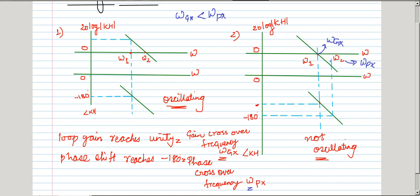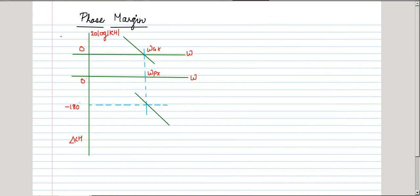The next question is: we can avoid oscillations, but by how much? We will answer this by considering three cases. In the first case, omega_gx — where the loop gain reaches unity — and omega_px — where the phase shift reaches minus 180 degrees — occur at the same frequency. That means Barkhausen's criteria are met at the same frequency, and the system will oscillate.